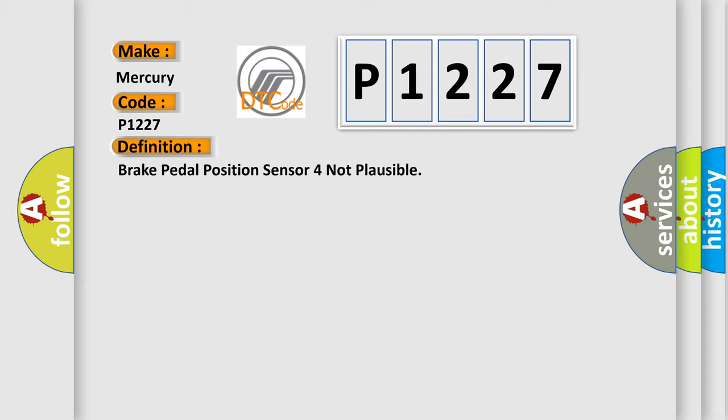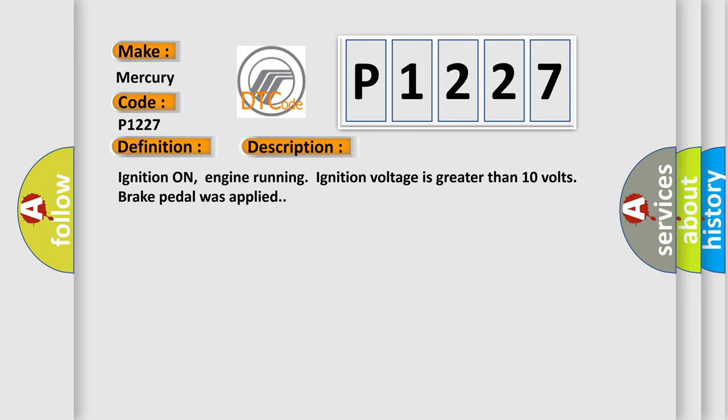And now this is a short description of this DTC code. Ignition on, engine running, ignition voltage is greater than 10 volts, brake pedal was applied. This diagnostic error occurs most often in these cases.